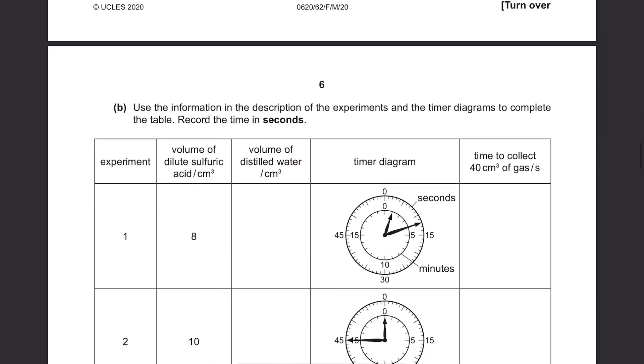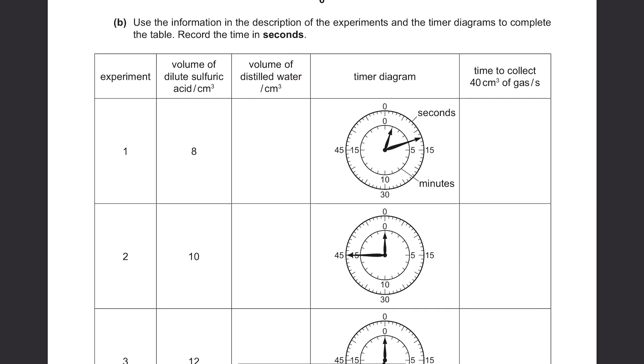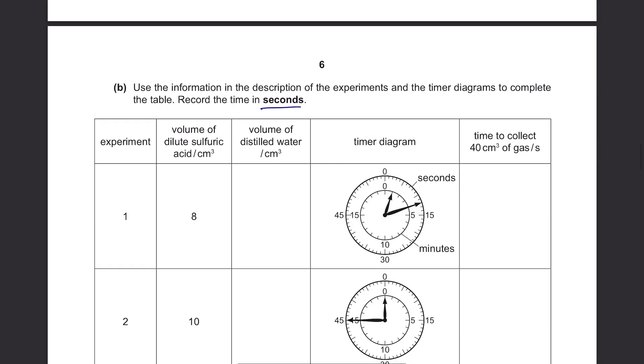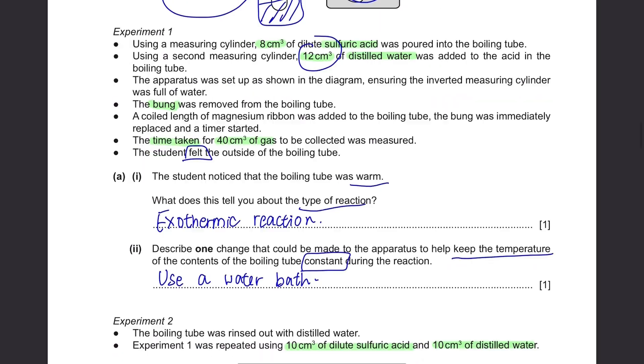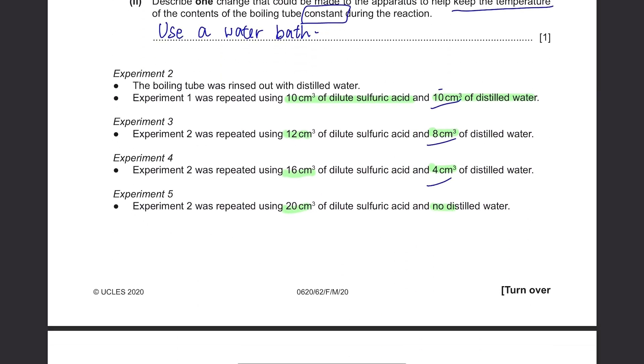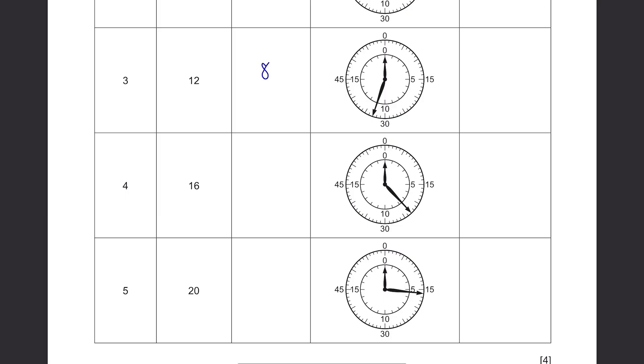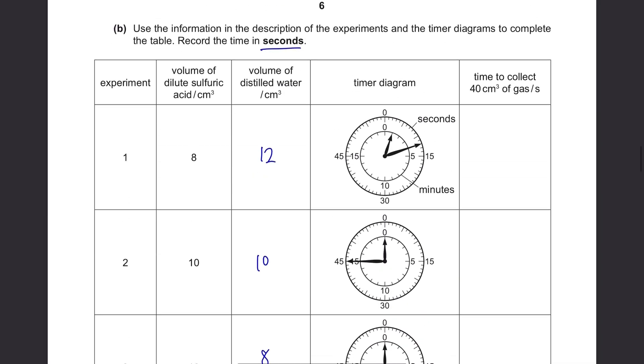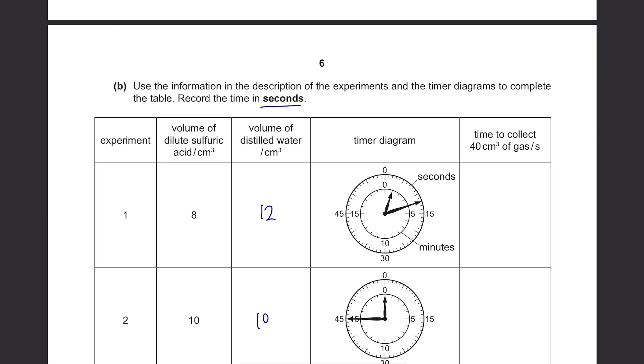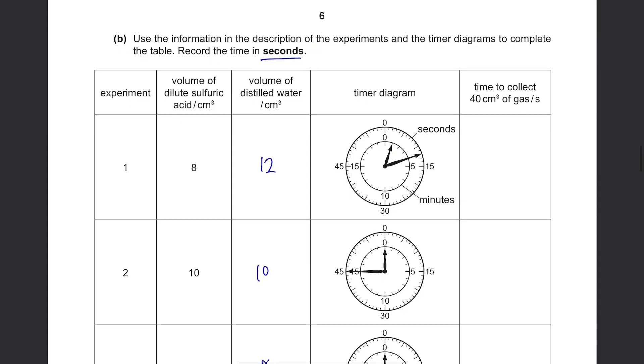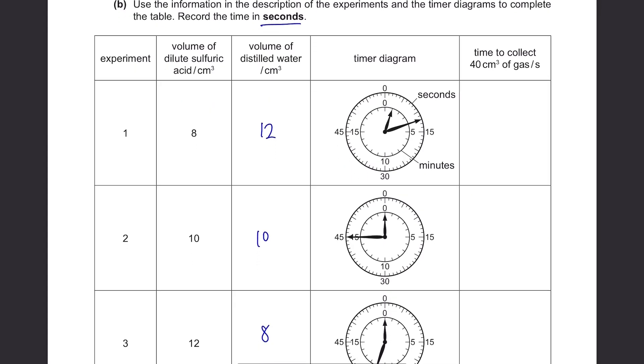Part B. Use the information in the description of the experiments and the timer diagrams to complete the table. Record the time in seconds. So the volume of distilled water, it was 12 at first, then 10, 8, 4, 0. Then the time to collect 40 cm cubed of gas. We just need to read the timer diagram. Nothing very confusing.